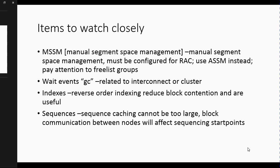Another item to watch is wait events. When you review the AWR report, you'll see 'gc' prefixed events, which refer to things related to the interconnect or cluster — that tells you what's happening in your RAC environment. For indexes, you should enable reverse order indexing, which reduces block contention for reads.